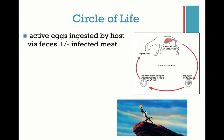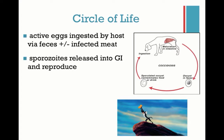There is one form of coccidia that they can get by eating infected meat, so by eating a mouse or some other animal that has this parasite. Do you guys know what it is? Toxo — perfect, yeah. So Toxo is the one that can be transmitted by infected meat, but the other ones are typically via feces.